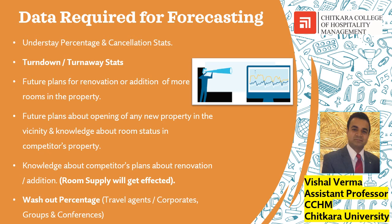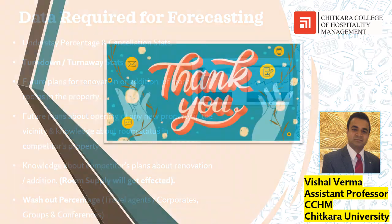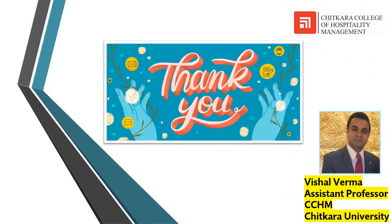One should always be vigilant and have a good idea about the competitor's inventory and offered rates, so you can play your cards accordingly. One should also track room cancellations and the reasons behind them — guests may have moved to a competitor, so always stay in touch with the contact at the company that gave you the business. Washout percentage is again very important. That's it on forecasting — I hope you enjoyed the topic and learned from it. Thank you so much, have a good day.